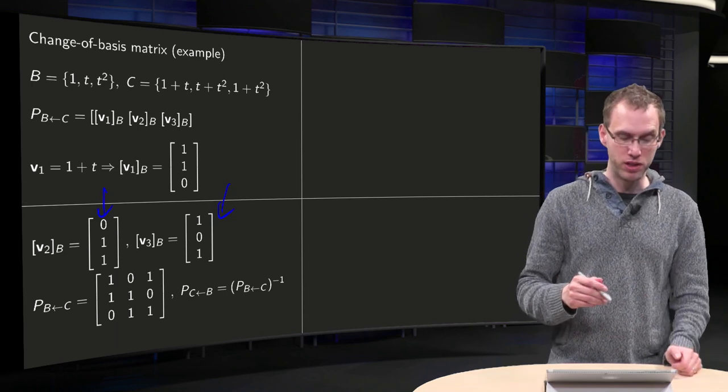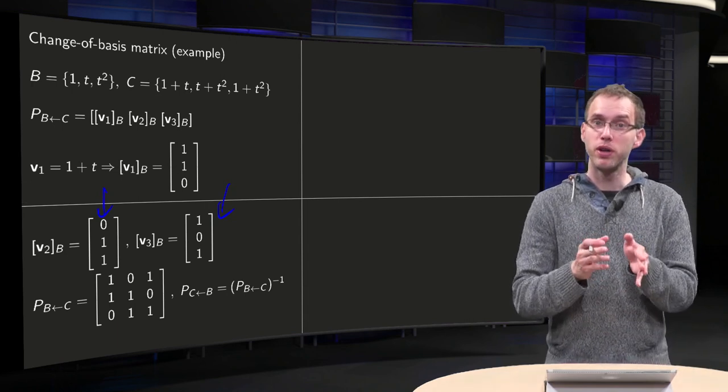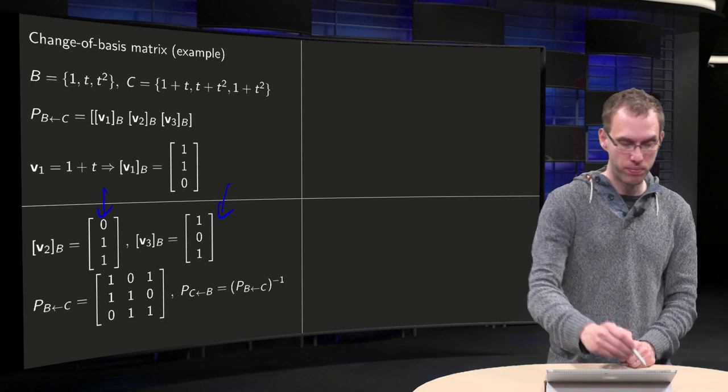So, there we have P from C to B is V1 in B, V2 in B, V3 in B, there we are.